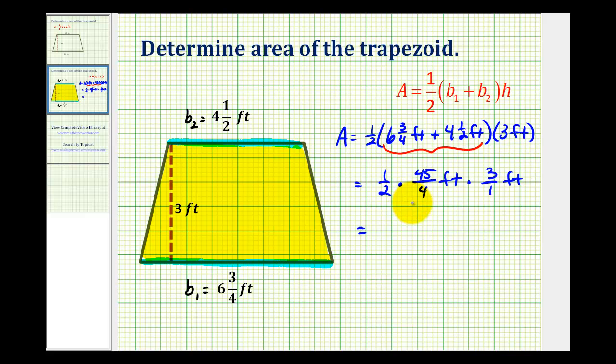Notice how there are no common factors between the numerator and denominators, so this is not going to simplify, so now we can go ahead and multiply. We have one times forty-five times three, that's going to be one-hundred-thirty-five. Denominator is going to be two times four, which is eight. And then feet times feet will give us feet squared.